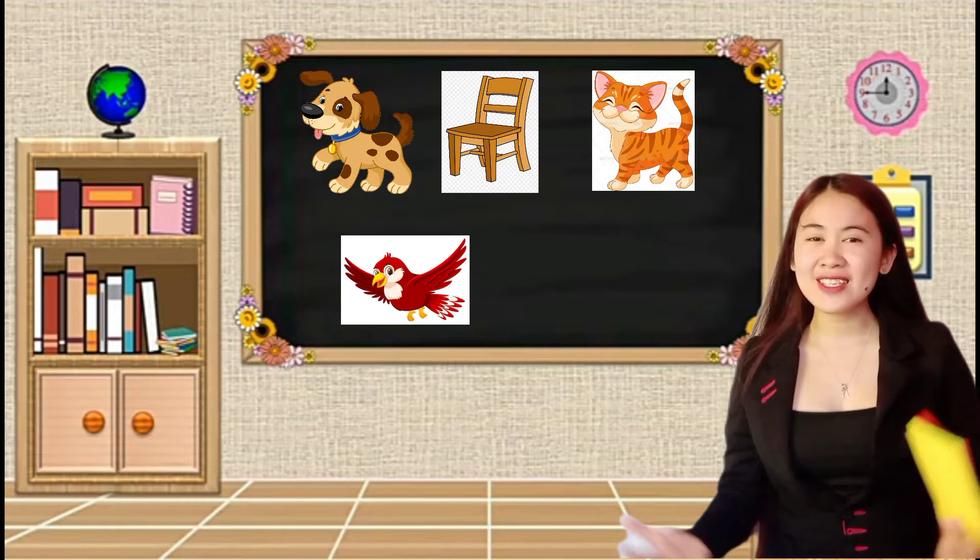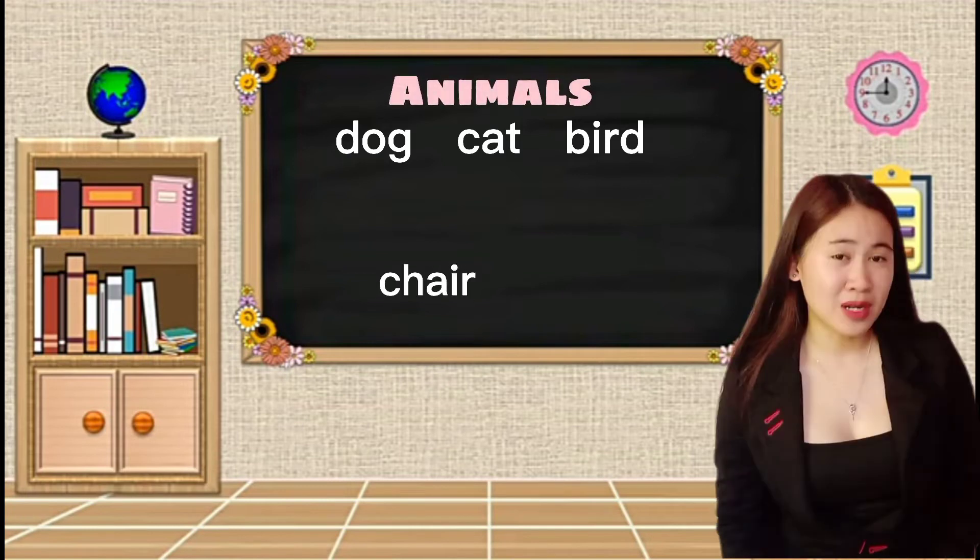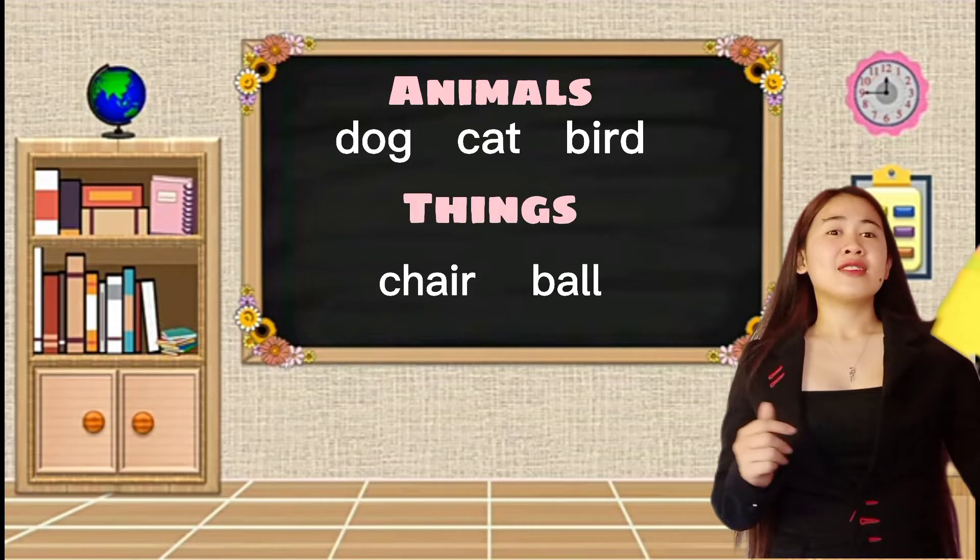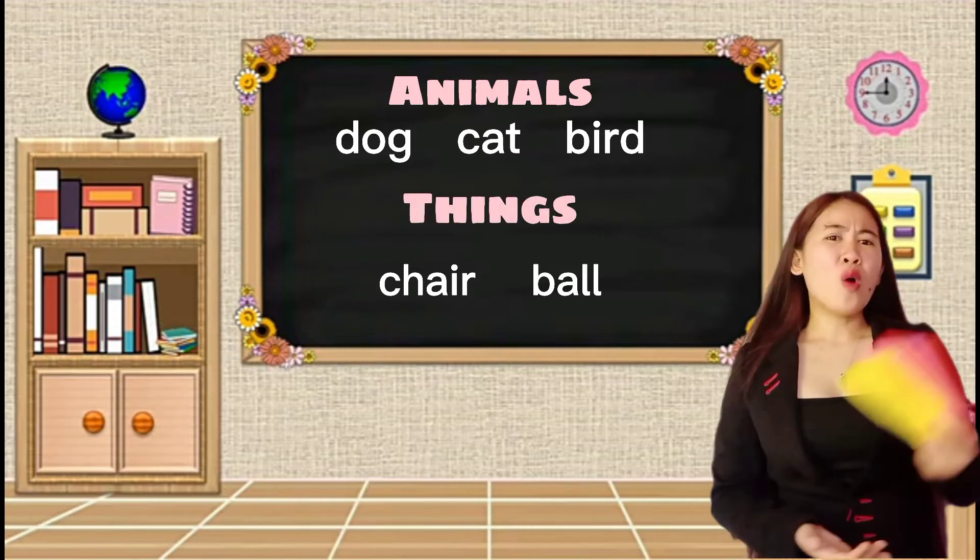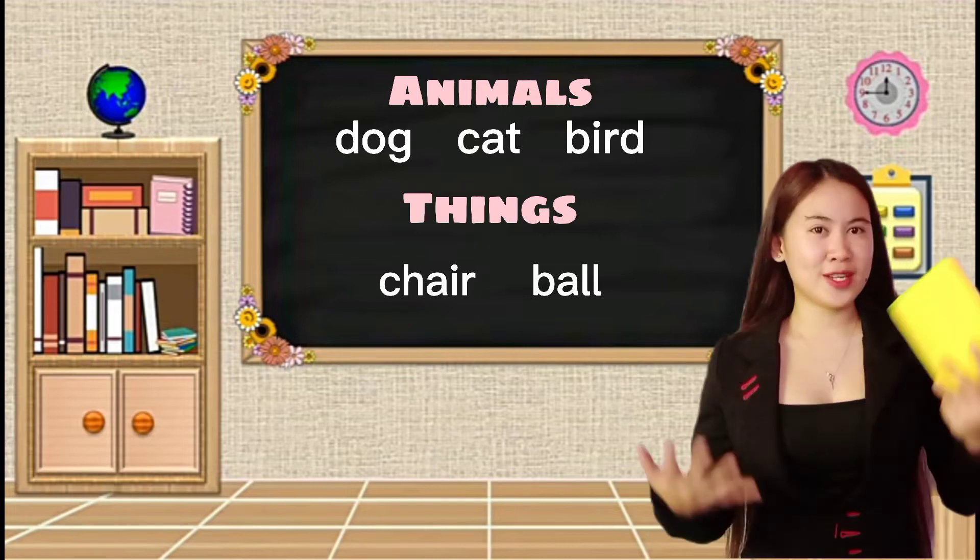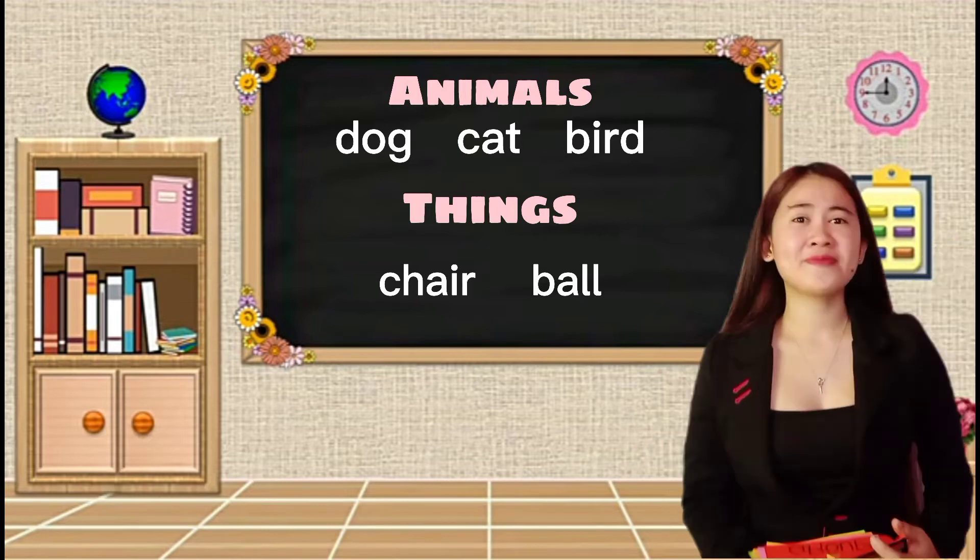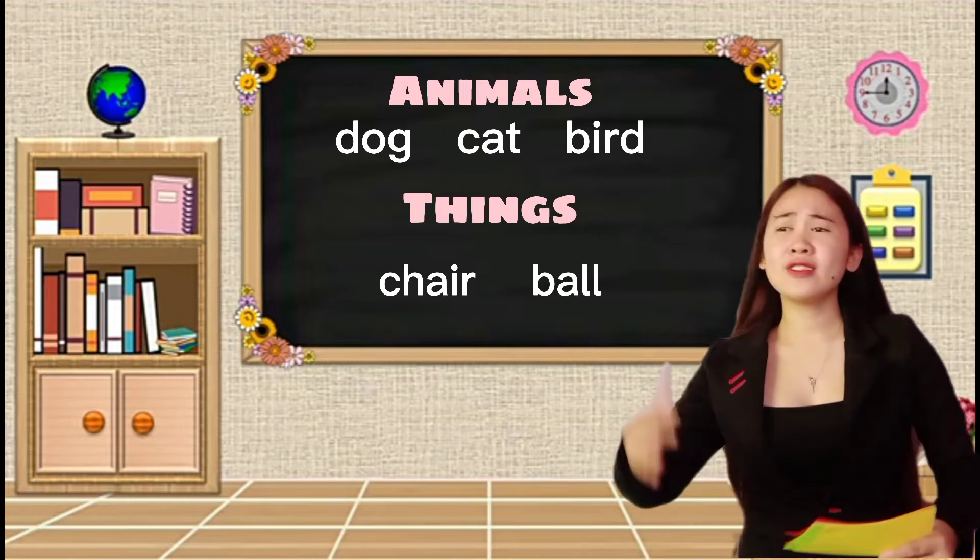Now, we will be knowing what are those things. Who can tell me what are those things? Okay, you have a good observation. So, dog, cat, bird, are animals, while chair and ball are things. My question is, what are their differences? Yes, animals can breathe and can walk while the things can't. Does the dog, cat, and bird move by itself? Yes, it moves by itself. Does it grow and change? Great. They grow and change.